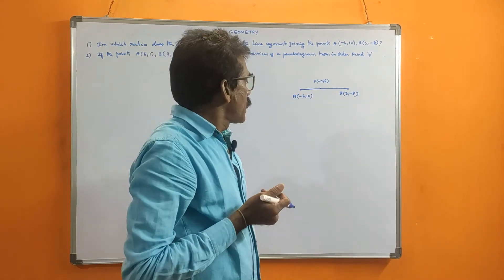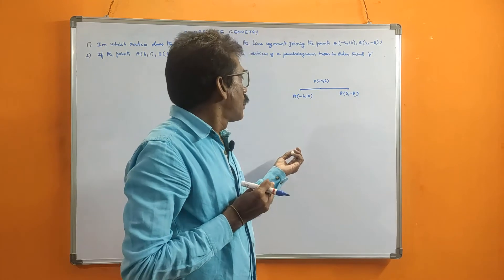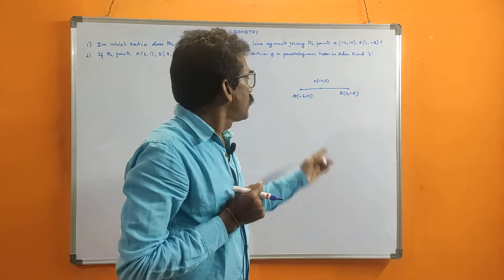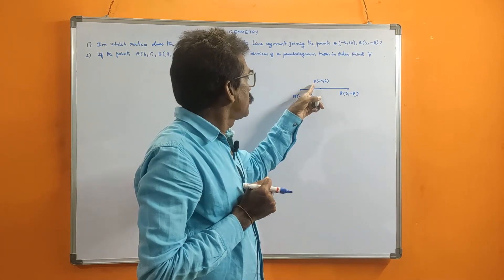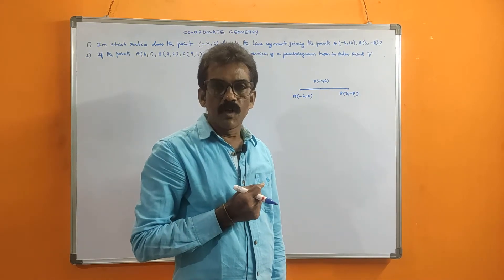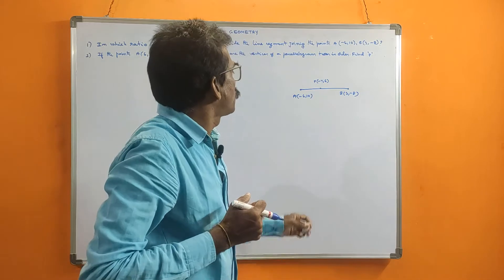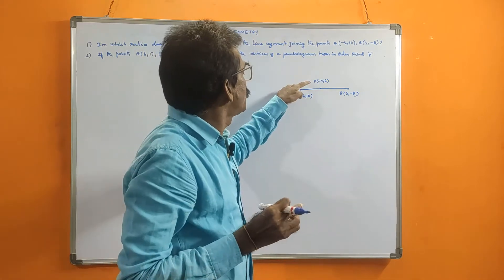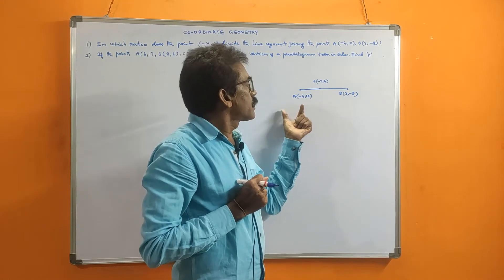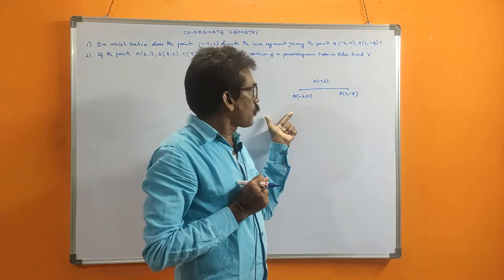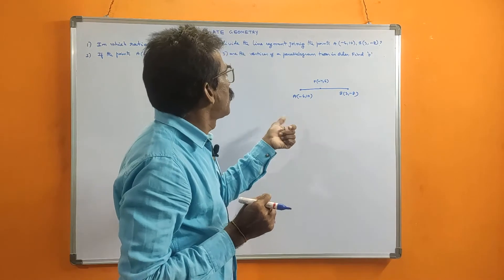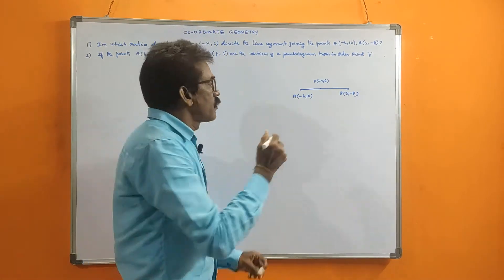Before, given M1:M2 ratio, we calculated the coordinates of point P. But now, the point is given and we need to find in which ratio it divides line AB. The formula is the same, but M1 and M2 we have to find. We equate the given point coordinates with the formula coordinates, and by equating we will get the M1 and M2 values.